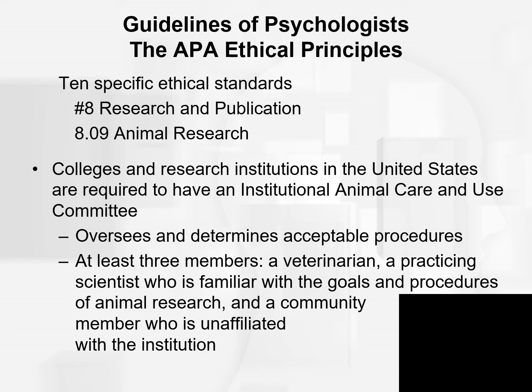If I'm a researcher doing research on animals, I write up my questions, possible answers, goals, and procedures, and the committee determines if it's acceptable. There are at least three members: first, a veterinarian who is an animal advocate; second, a practicing scientist familiar with animal research goals and procedures but unaffiliated with the specific research being reviewed; and a community member unaffiliated with the institution, typically someone with a background in ethics — sometimes members of the clergy.